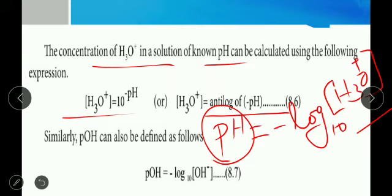Similarly, we can calculate the pOH. Instead of H₃O⁺ we use OH⁻, so pOH = −log₁₀[OH⁻]. If we know the pH value we can calculate [H₃O⁺] concentration, and if we know [H₃O⁺] concentration we can calculate the pH value — and vice versa.